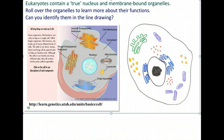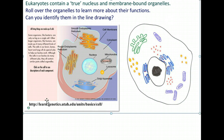So 2.3 is about eukaryotic cells. 2.1 is cell theory and microscopes, 2.2 is prokaryotes, 2.3 is eukaryotes. Eukaryote broken down: 'eu' means true, whereas 'karyote' means nucleus. So eukaryotic cells have true nuclei, and they have what we call membrane-bound organelles, as opposed to prokaryotes. Here is a link to help you practice identification of some of these organelles, and you'll see some of that in the other podcasts as well.